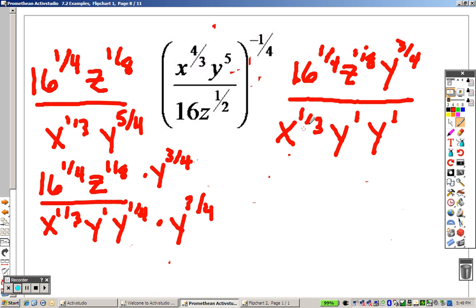Now I need to get rid of that x to the 1 third. So that means I can multiply both the top and the bottom by x to the 2 thirds. If I multiply both the top and the bottom by x to the 2 thirds, then 1 third and 2 thirds is a whole. So now I'm looking at 16 to the 1 fourth.